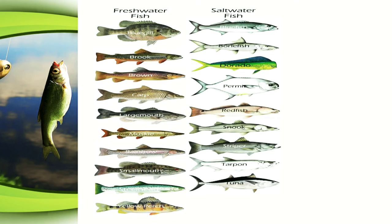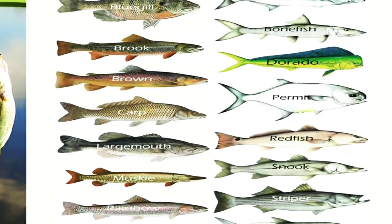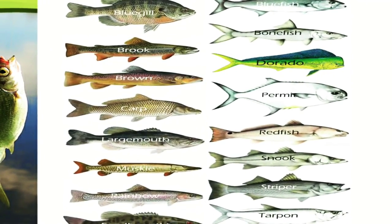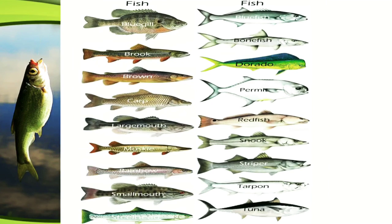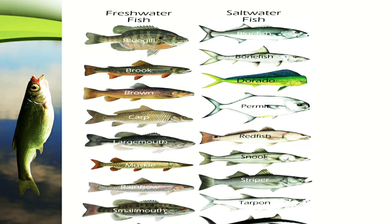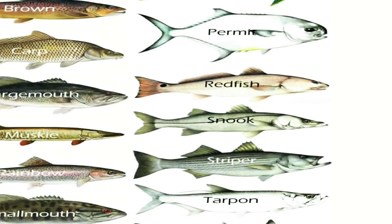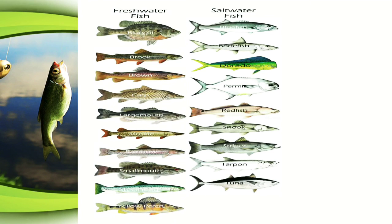Sport fishes can be of different sizes and classified between freshwater and saltwater species. Freshwater sport fishes include bluegill, brook trout, brown trout, carp, largemouth bass, muskie, rainbow trout, smallmouth bass, and steelhead. Saltwater sport fishes include bluefish, bonefish, dorado, permit, redfish, snook, tarpon, and tuna.